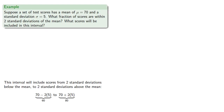For example, suppose a set of test scores has a mean of 70 and a standard deviation of 5. What fraction of the scores are within two standard deviations of the mean, and what scores will be included in this interval?